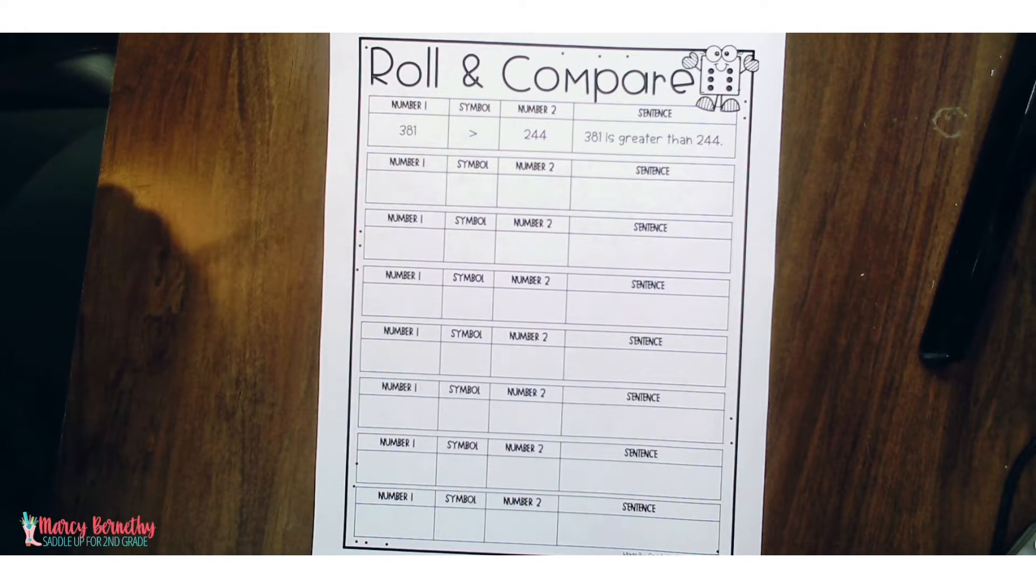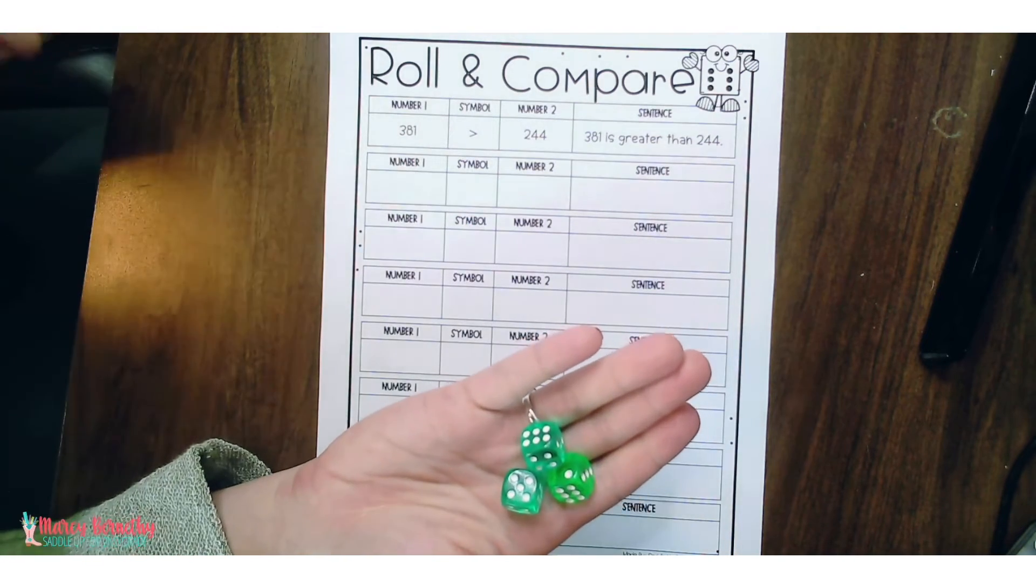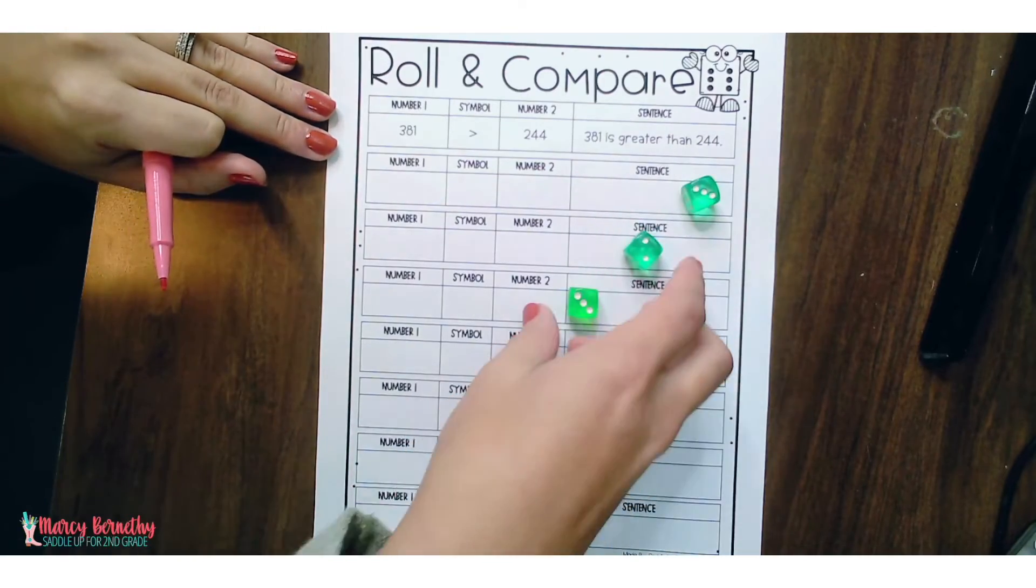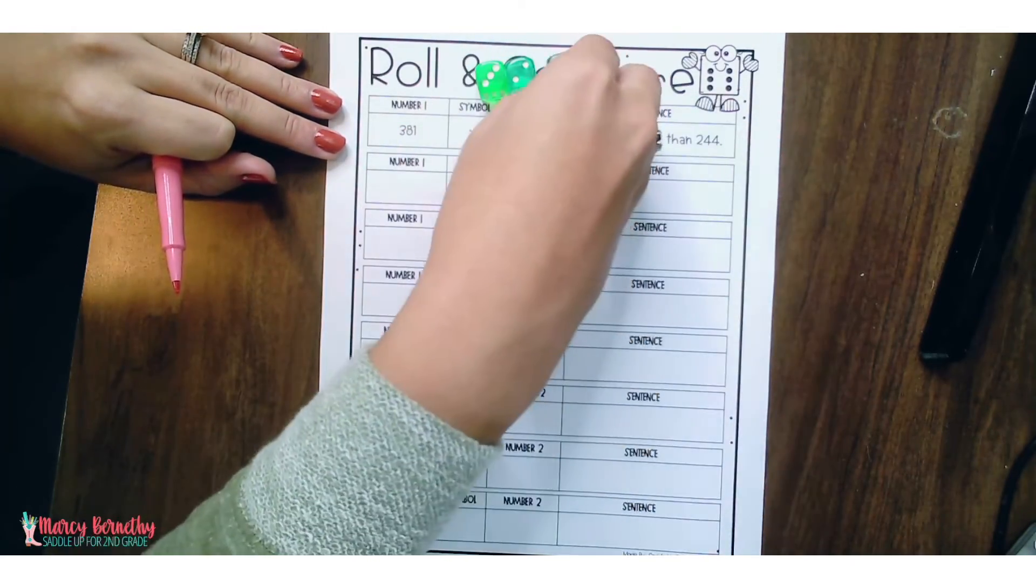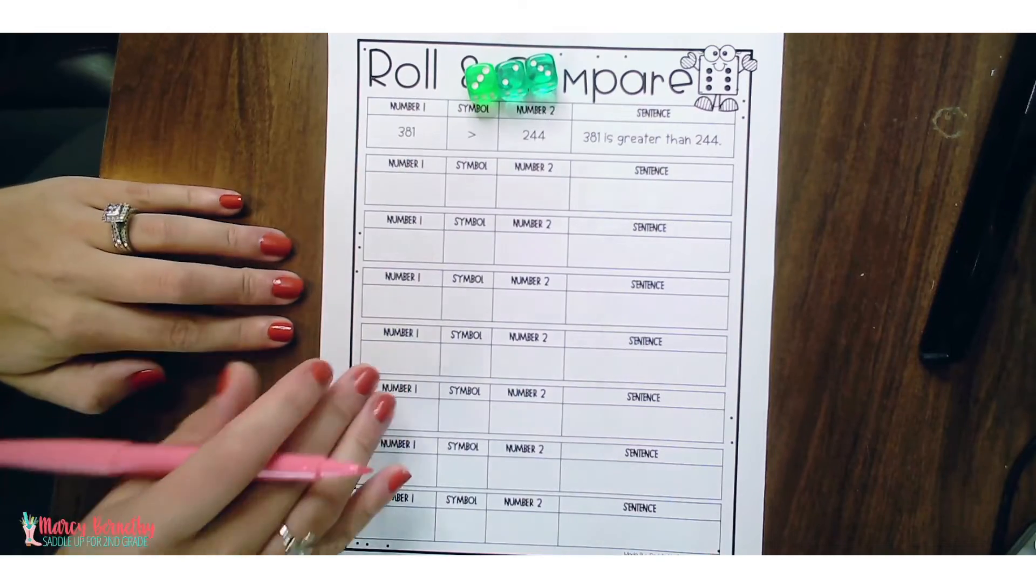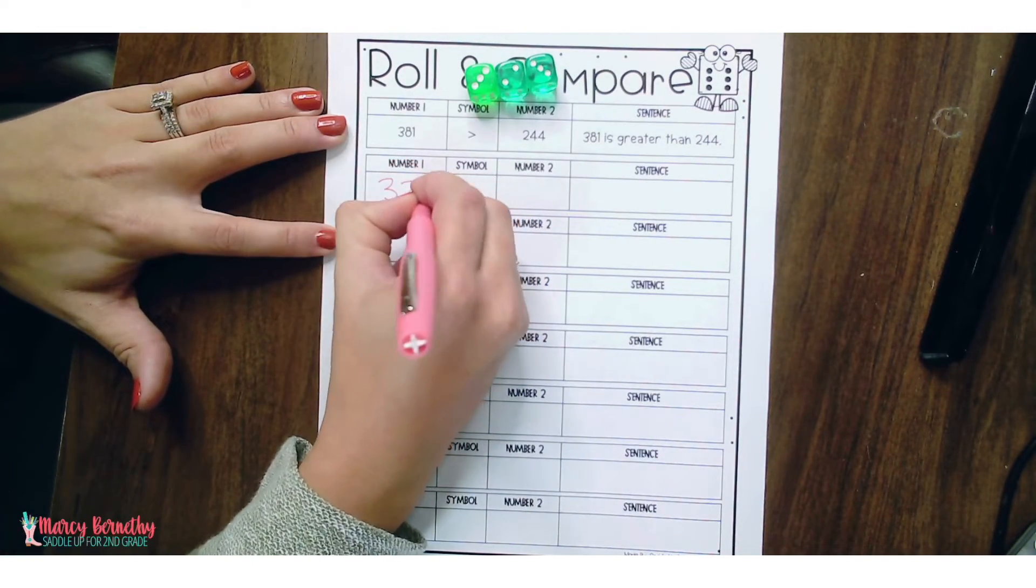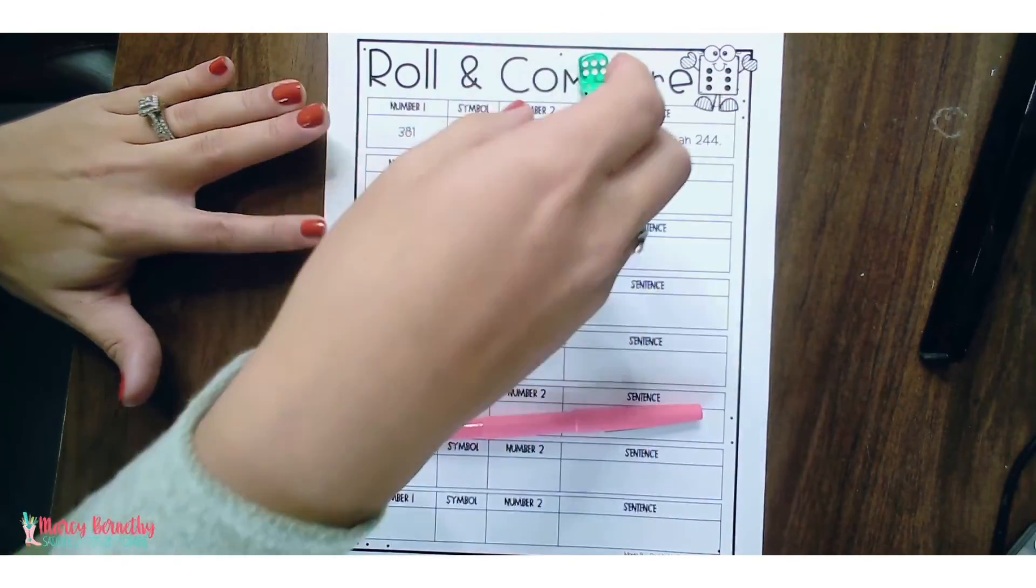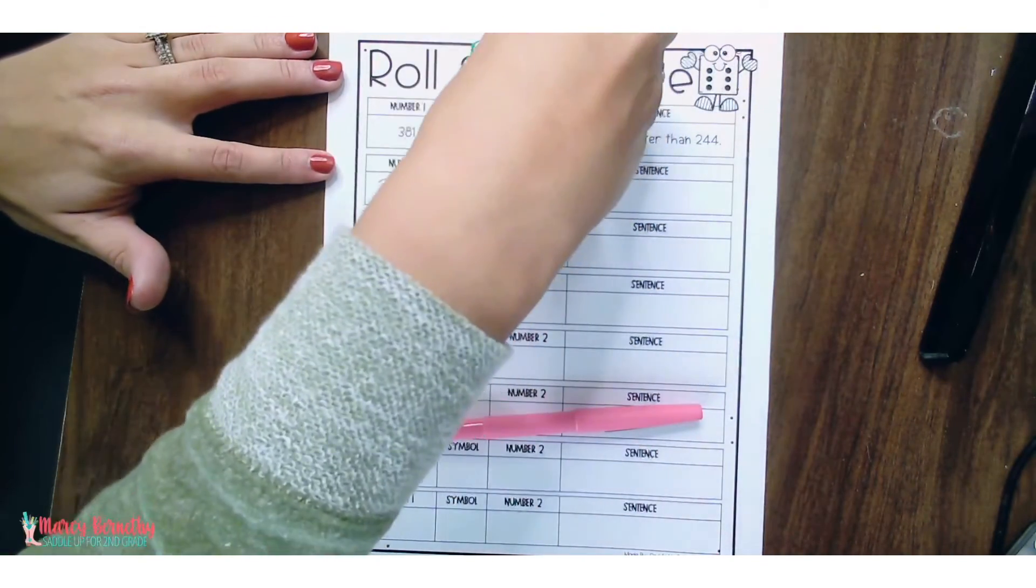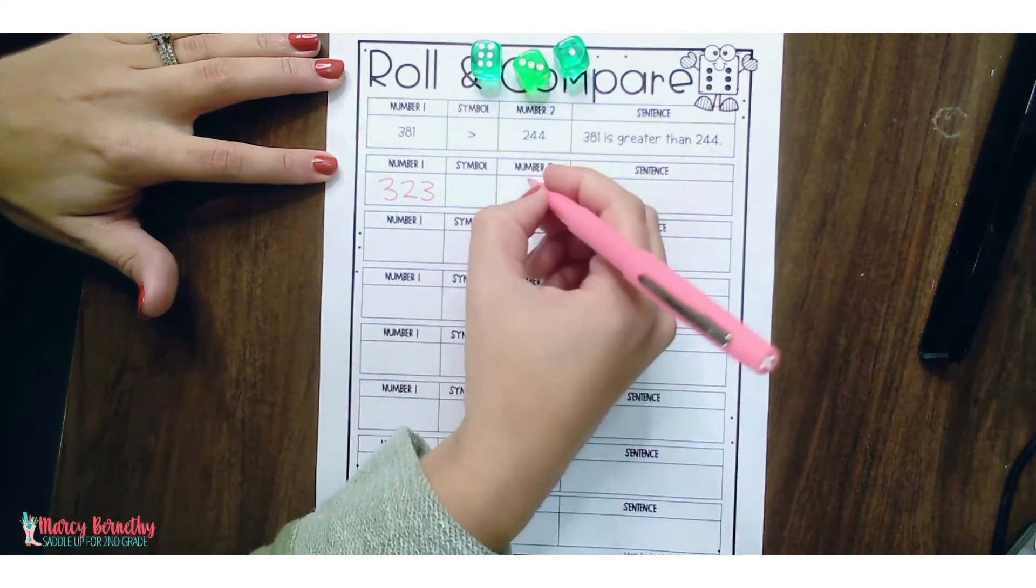So let me show you how this would work. They're going to take three dice and roll to create a three-digit number. So I created 323. Now I'm going to roll again to create my second number, 631.